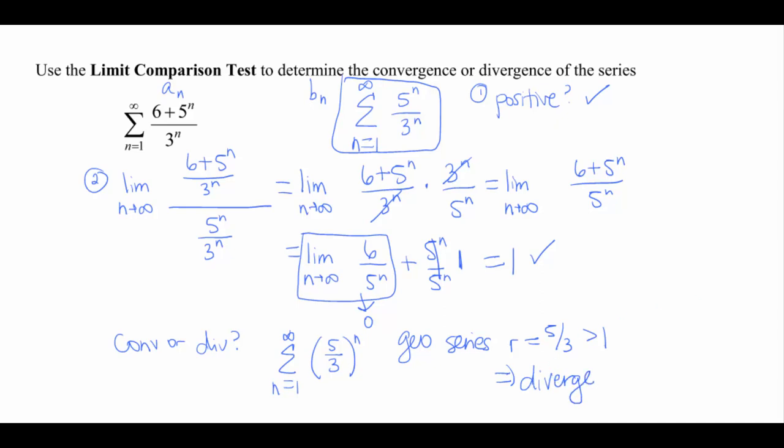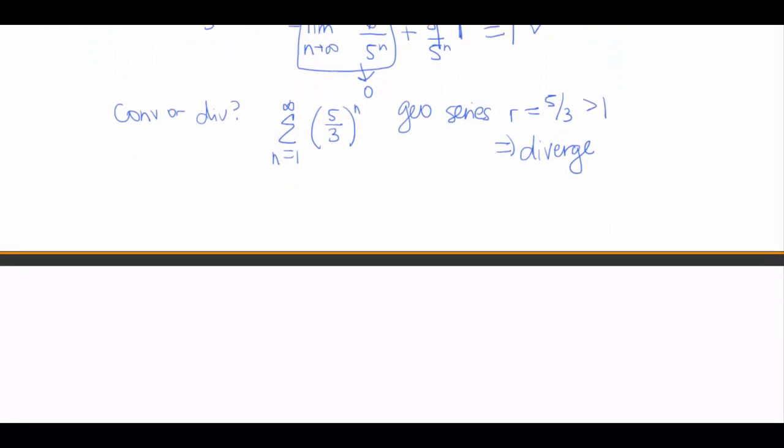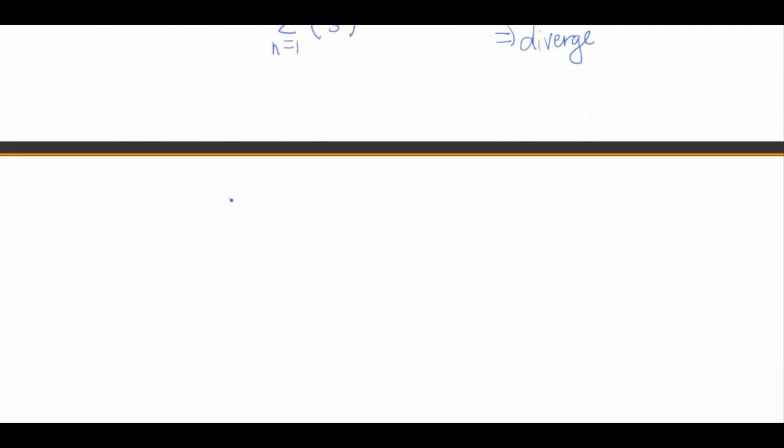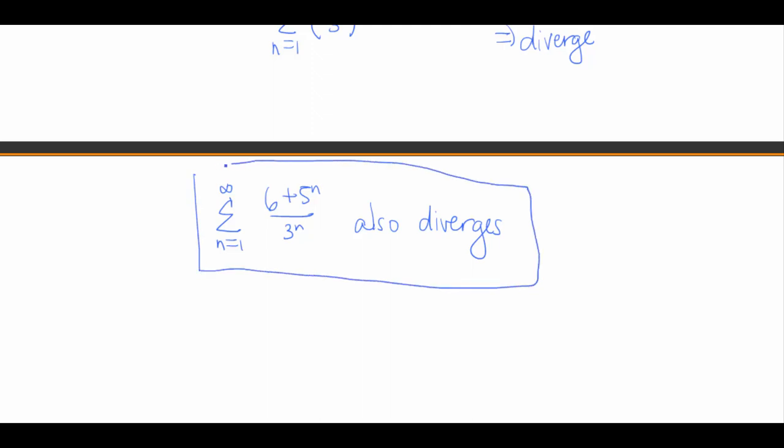Okay, so that means then, I'm gonna go ahead and finish my question. So that means our original series, n goes from 1 to infinity, of 6 plus 5 to the n over 3 to the n also diverges. And that was the original question that we needed to answer. Okay, so we had to check a couple of initial conditions until we got here, and then we had to make sure we had a series that we actually recognized, which we did. That one diverged, so this one also diverges.